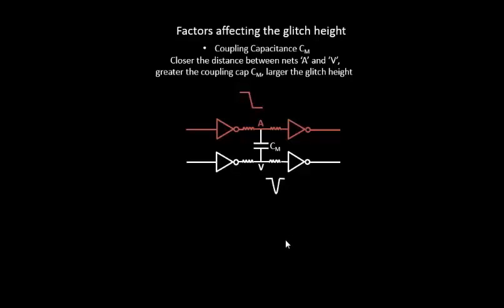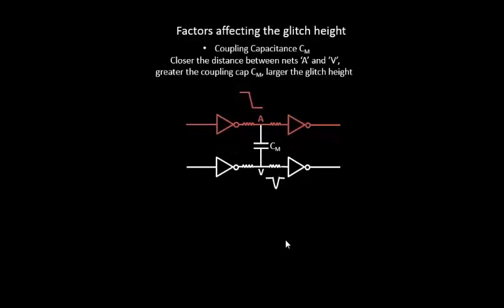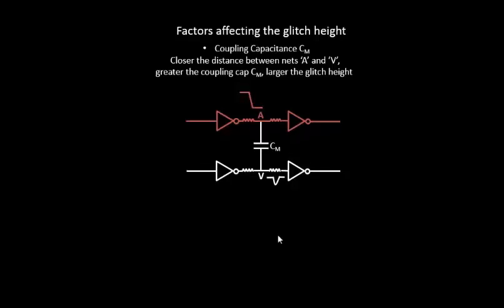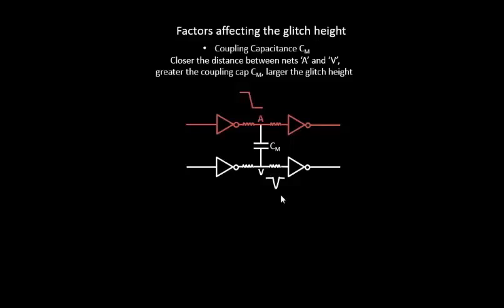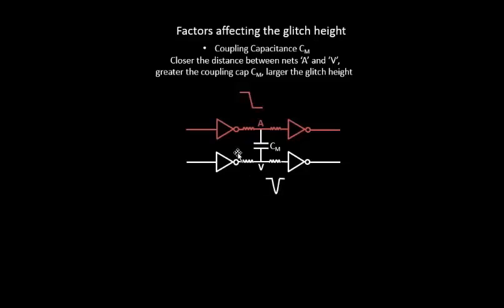If you increase the distance between aggressor and the victim, you see the glitch height to be less. And if you reduce the distance between aggressor and the victim, you see an increase in the glitch height. So one basic thing that you see over here...